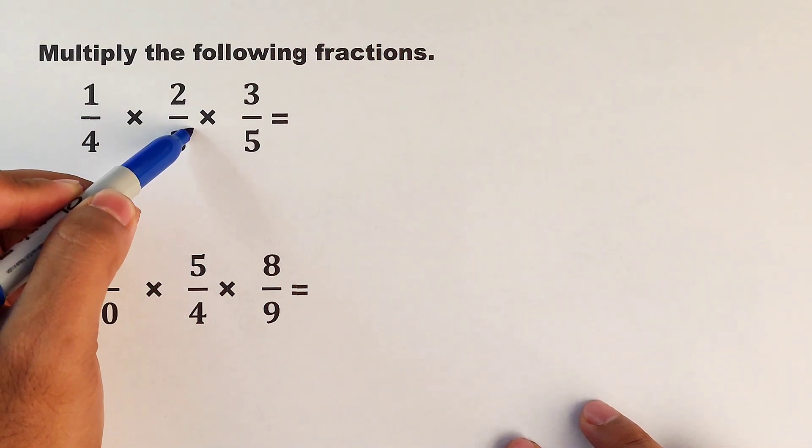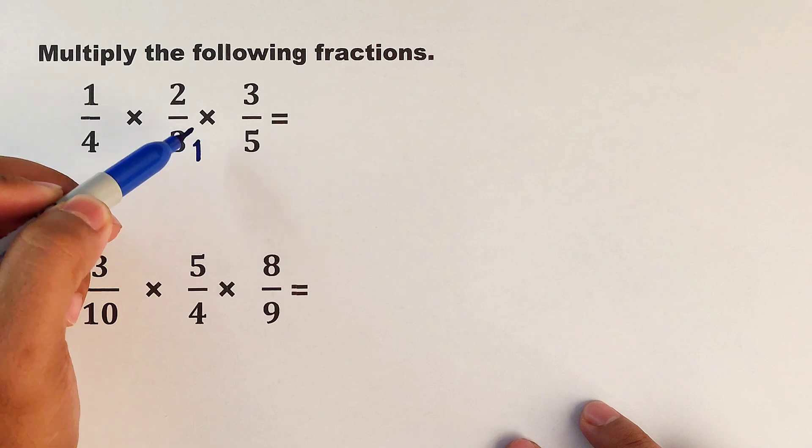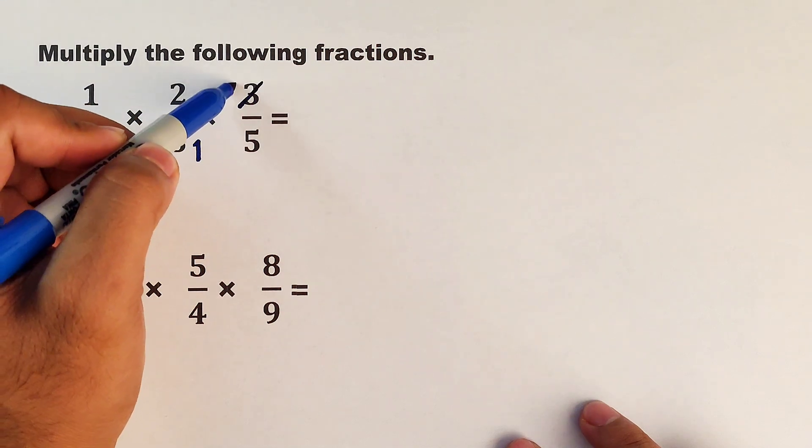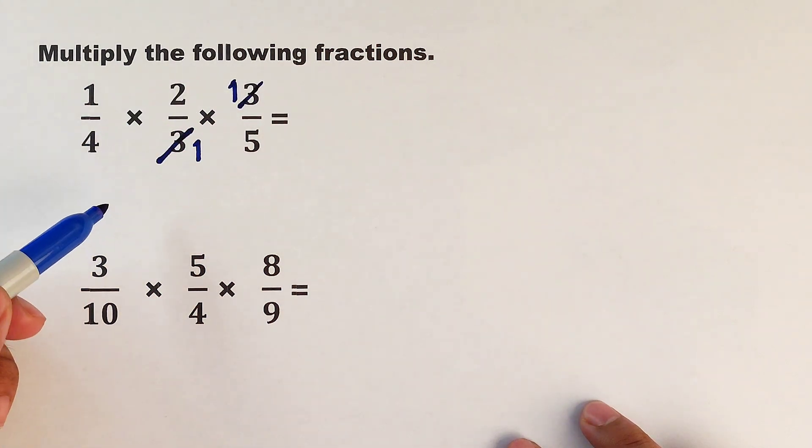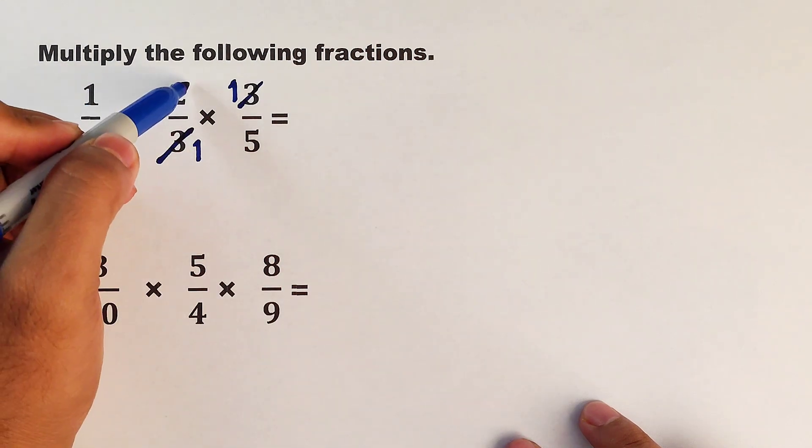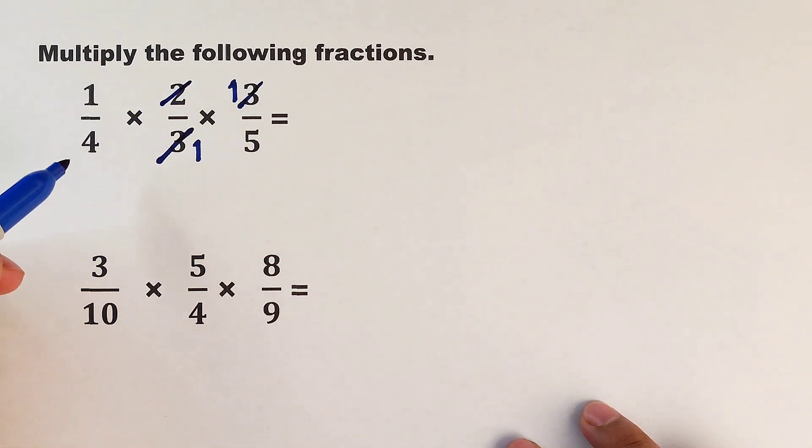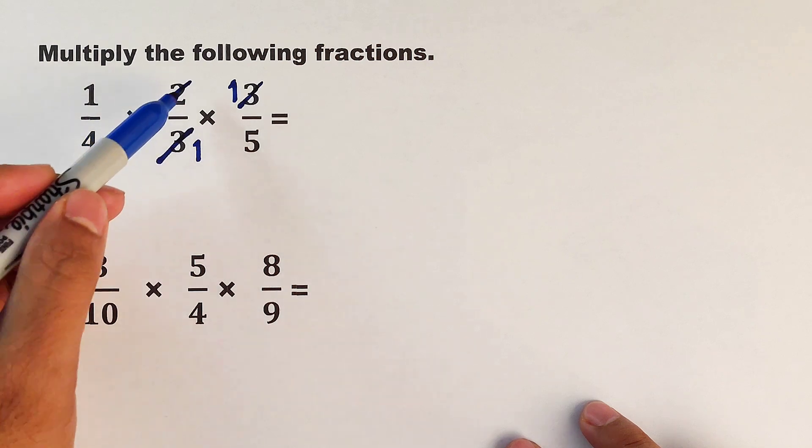...cancel out this 3—it will become 1—and also this 3, it will become 1. Now as for the other part of the fractions, for 2 and 4, we can cancel 2 because the greatest common factor between 2 and 4 is simply 2. So it will become 1 and this will become 2.